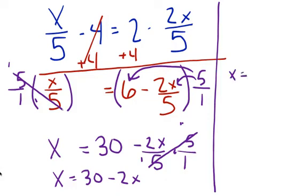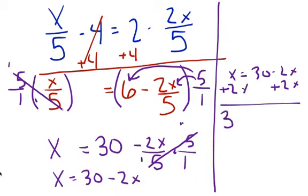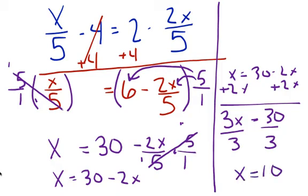So x equals 30 minus 2x. Now we go on to our variable-on-both-sides step. I'm going to add 2x here and add 2x there, and I end up with 3x equals 30. I divide each side by 3, and x is equal to 10. So this is the solution to that problem. Remember, you want to plug in that 10 to make sure that it works.